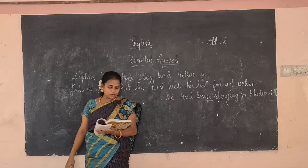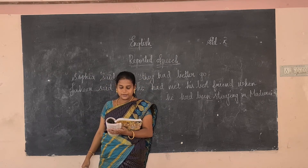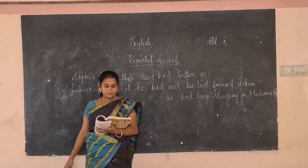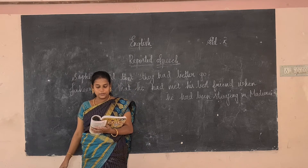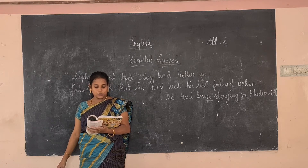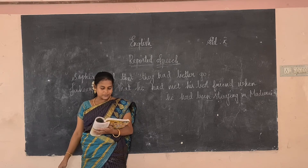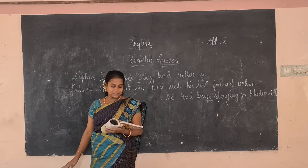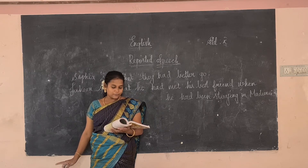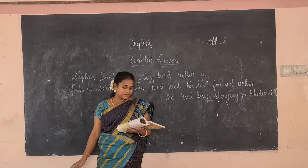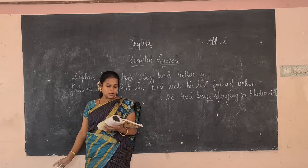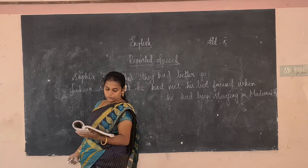We do not usually change the modal verb 'must' or 'need/needn't', but 'must' can become 'had to' or 'would have to', and 'needn't' can become 'didn't have to'. For example: 'I must wash up.' She said that she must wash up or she had to wash up. 'We must do it in June.' He said that he must do it in June, or he had to do it in June.